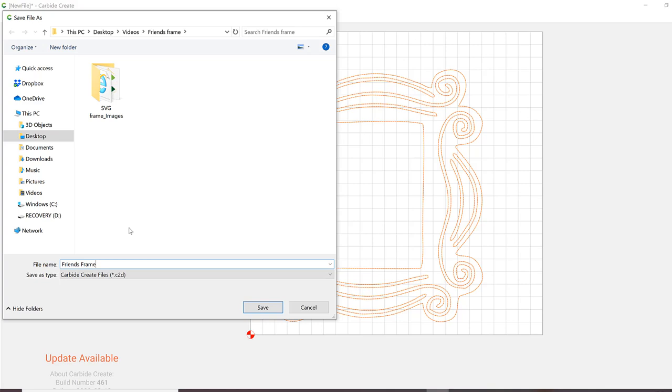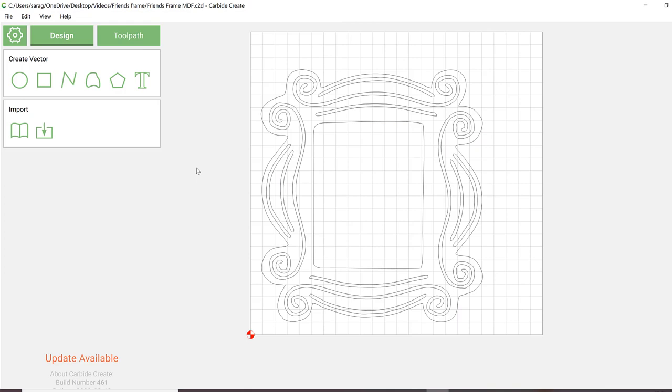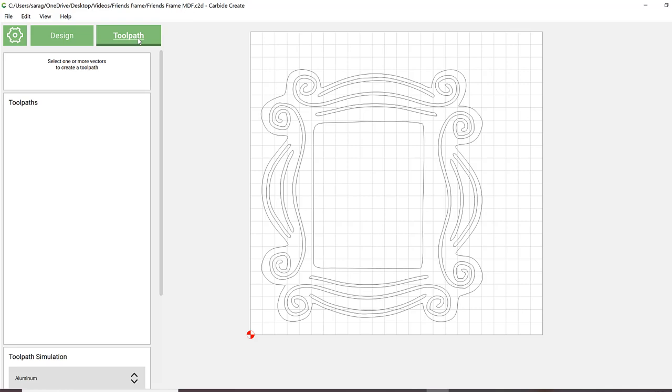In order to create the details, I'll be using Carbide's bit number 302, which is a 60 degree V-bit. Select the image details, not the borders, and create a V-carve toolpath. Carbide has done a great job of importing all of their bits and bit information into a tool library sorted by machine, then material, and then even the bit type.